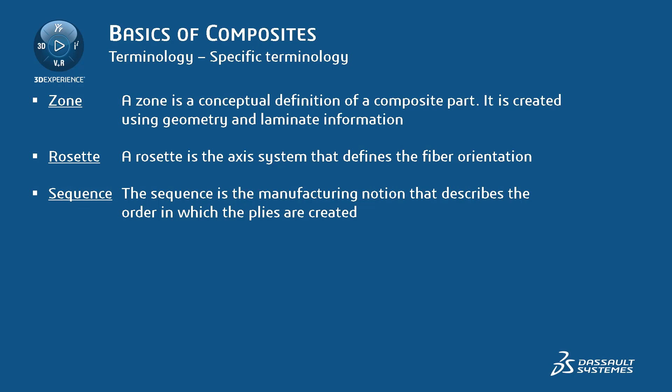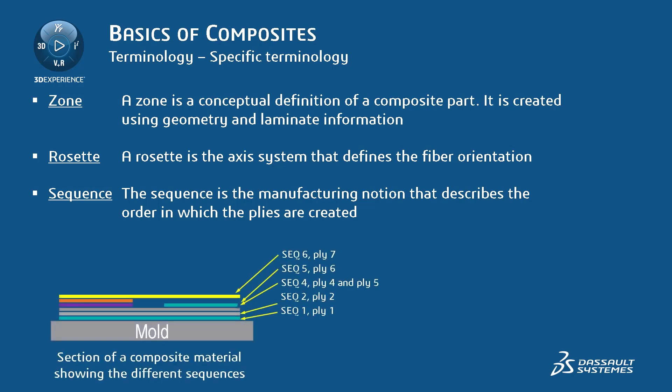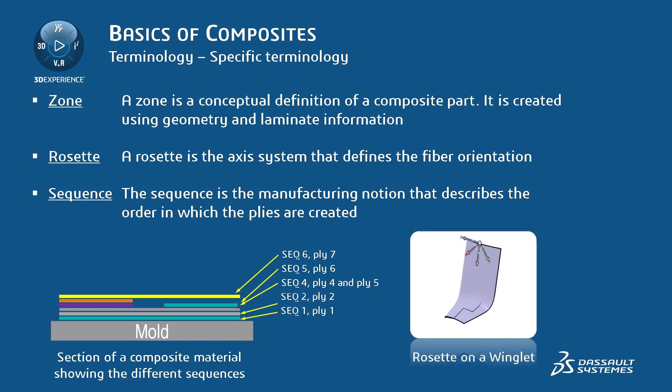A variation of the zone-based method is when the zones are defined by and in a grid, called the grid method, which is very efficient to design stiffened panels, for example. Those methods use surfaces — outer mold line or OML — to start the design process. But you can also, with the solid slicing method, use a solid; in that case, the solid is sliced to create plies. It is used for monolithic parts or re-engineered metallic parts. Zones are created using geometry and laminate information. A rosette defines the referential in which the fiber direction of plies will be defined. It is computed from a 3D axis system to a given location on a surface of the composite part.